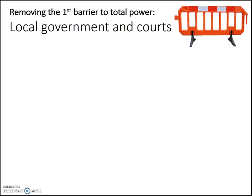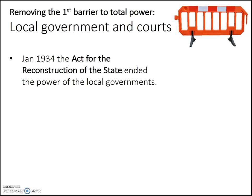The first big barrier to Hitler having total power were the local governments and the courts. Local government in Germany in 1933 was quite strong and was a barrier to total power, as was the independent court system. So in January of 1934, he passed a law called the Act for the Reconstruction of the States, which completely ended the power of local governments. Rather than Länder — local governments — he turned them into Gaus, dividing Germany into different regions and putting his own Nazi men into each of those regions, so Hitler controlled local government himself.